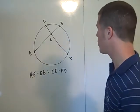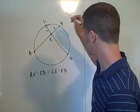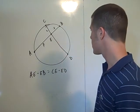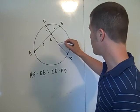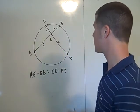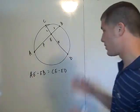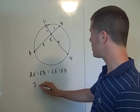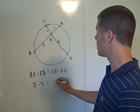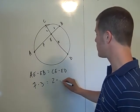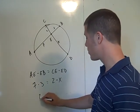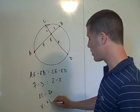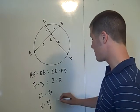For example, if this is 2, this is 3, let's say this is 7, and ED, let's say, is some missing value X, I'll solve for X. Well, then we can say that 7 times 3 equals 2 times X, so I'll have 21 equals 2X, and X equals 21 halves, which is, what, 10.5?